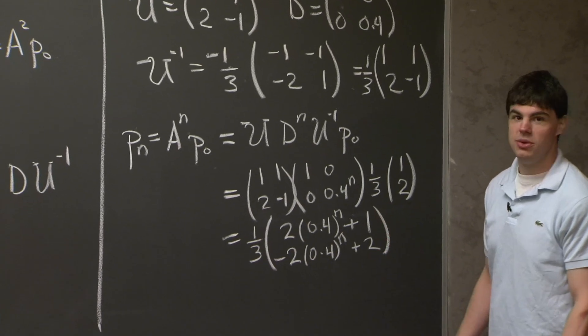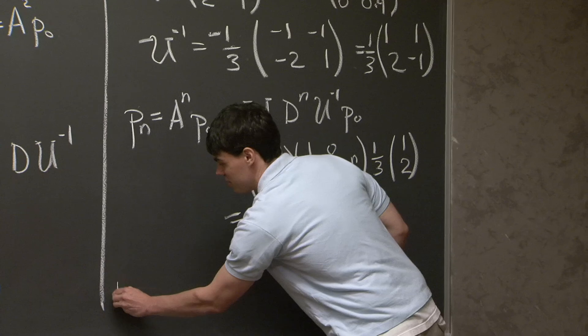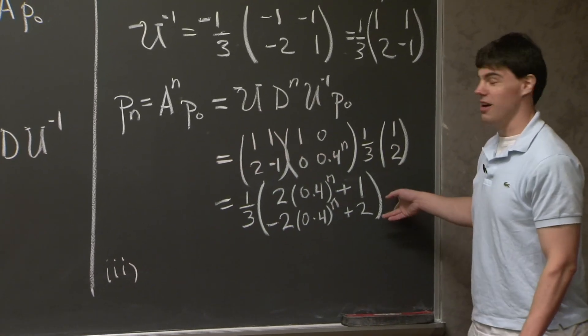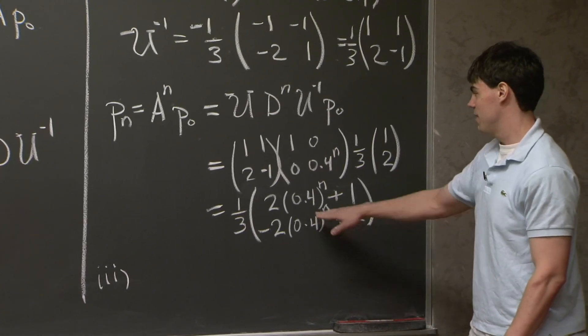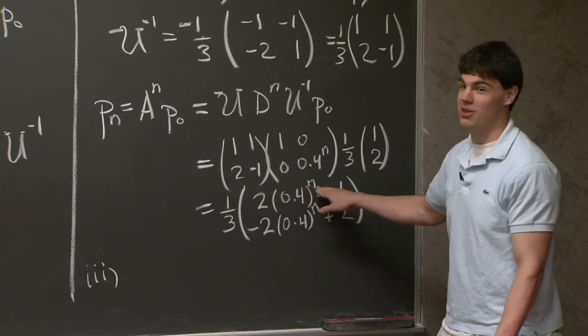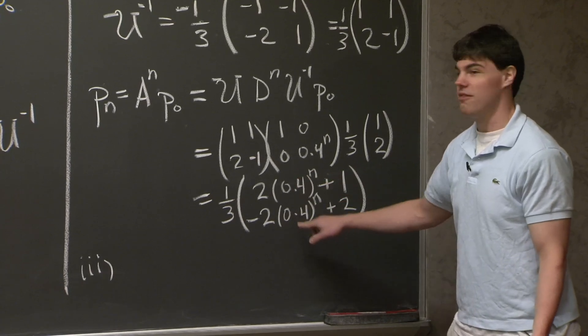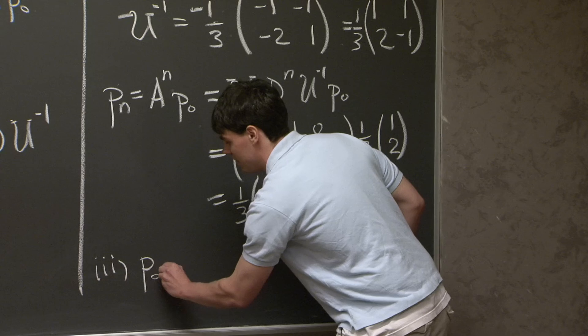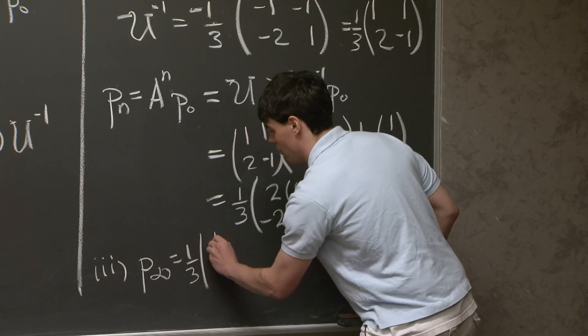OK, so this finishes up part 2. And then lastly, for part 3, what happens when n goes to infinity? Well, we have the answer for any n, so we can just take the limit as n goes to infinity. Now specifically, as n goes to infinity, 0.4 raised to some very large power vanishes. So these two terms drop off. And at the end of the day, we're left with p infinity is 1 third, 1, 2.